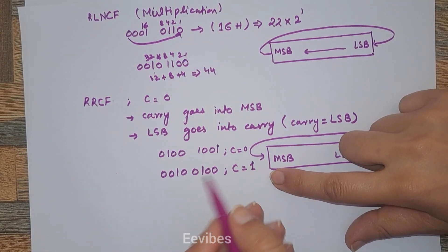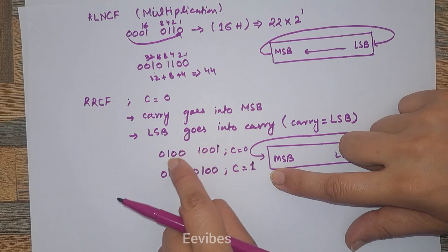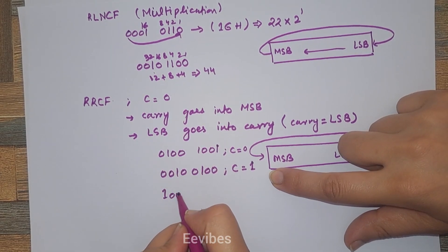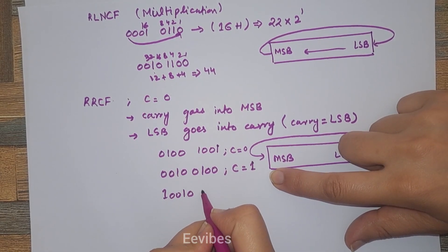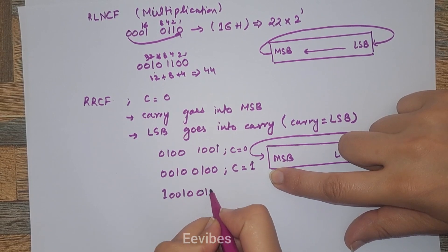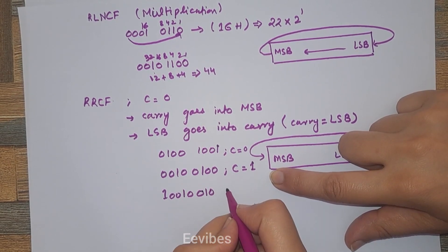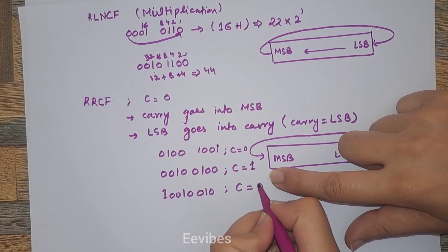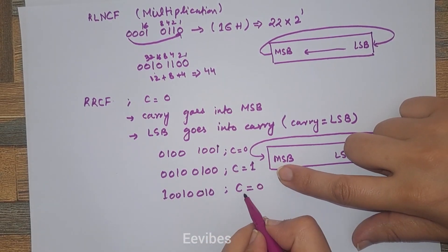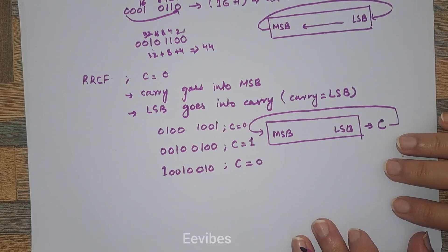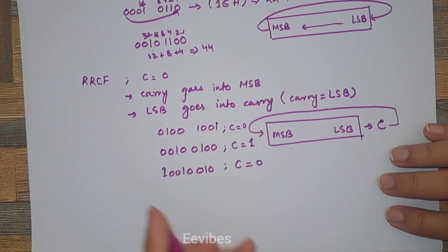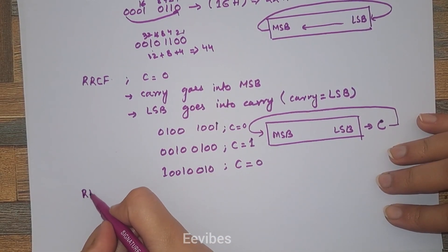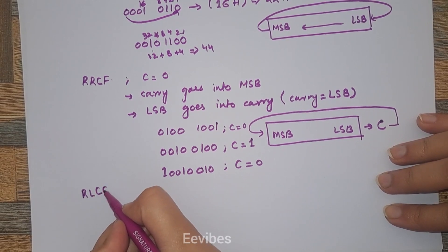Let's do another step. Again the carry — which is now 1 — goes into the MSB. So you will have 1001 0010. The 8 bits are complete while the carry becomes 0 because this LSB goes into carry. This was the third rotate instruction.